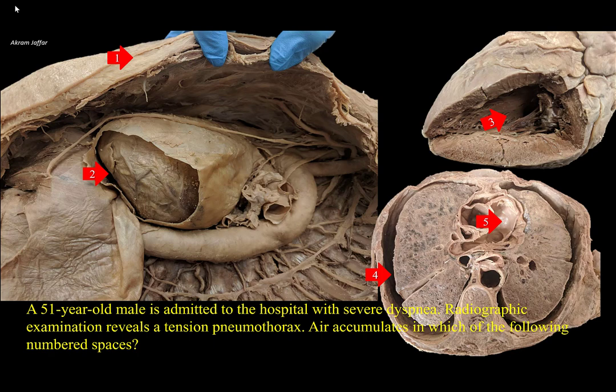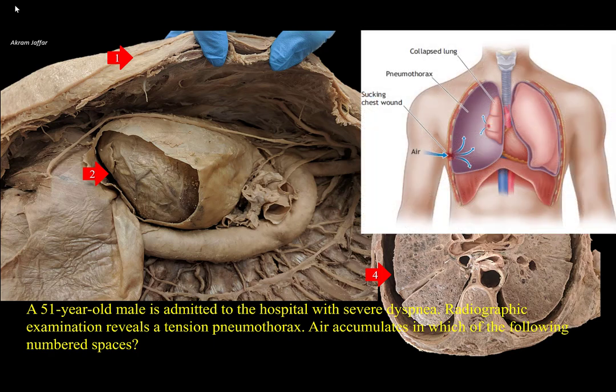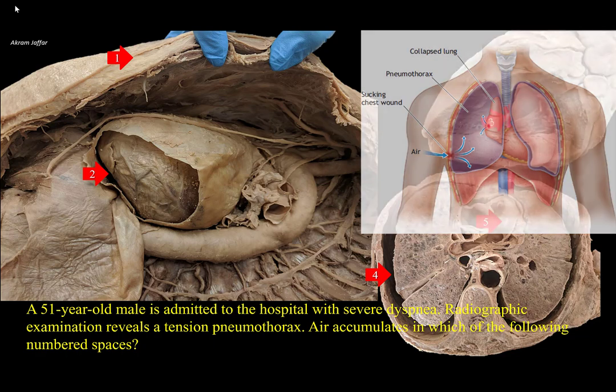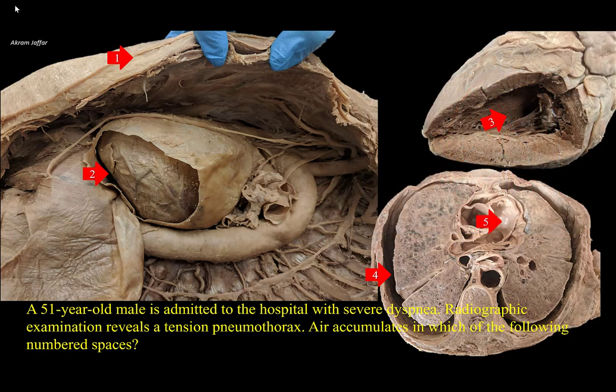Pneumothorax is the presence of air in the pleural cavity. In tensioned pneumothorax, air enters the pleural cavity during inspiration but cannot leave during expiration, causing an increased accumulation of air. Air accumulation will not only compress the lung, but will push the mediastinum to the other side, compressing the other lung and killing the patient.